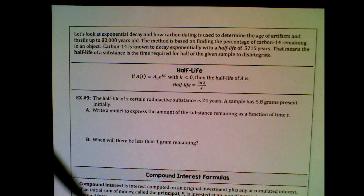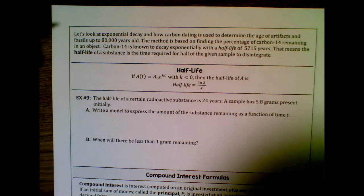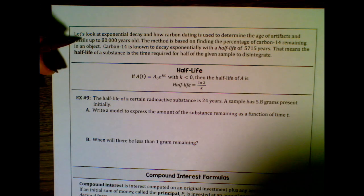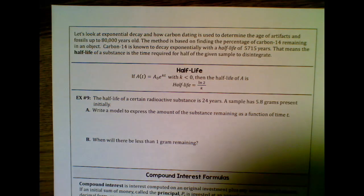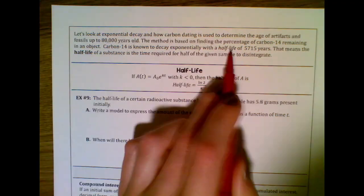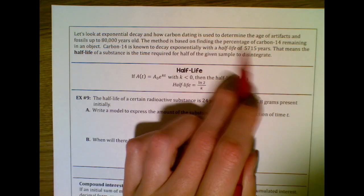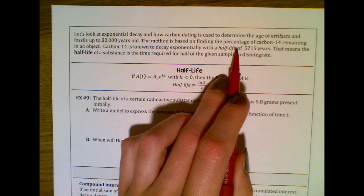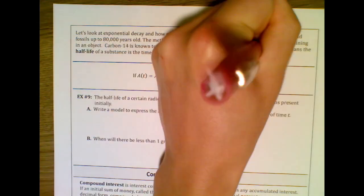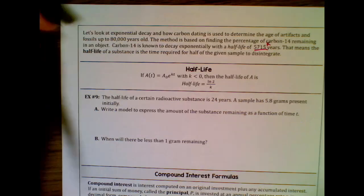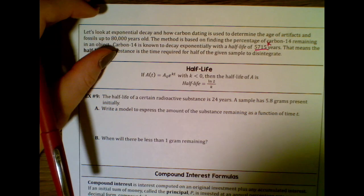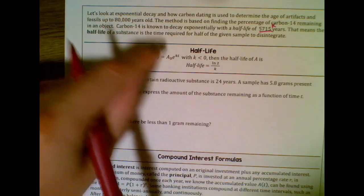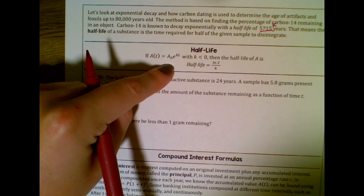Exponential decay and carbon dating is used to determine the age of artifacts and fossils up to 80,000 years old. The method is based on finding the percentage of carbon-14 remaining in an object. Carbon-14 decays exponentially with a half-life of 5,715 years — meaning every 5,715 years the carbon loses half its amount. The half-life equation is: half-life = ln(2) / k.